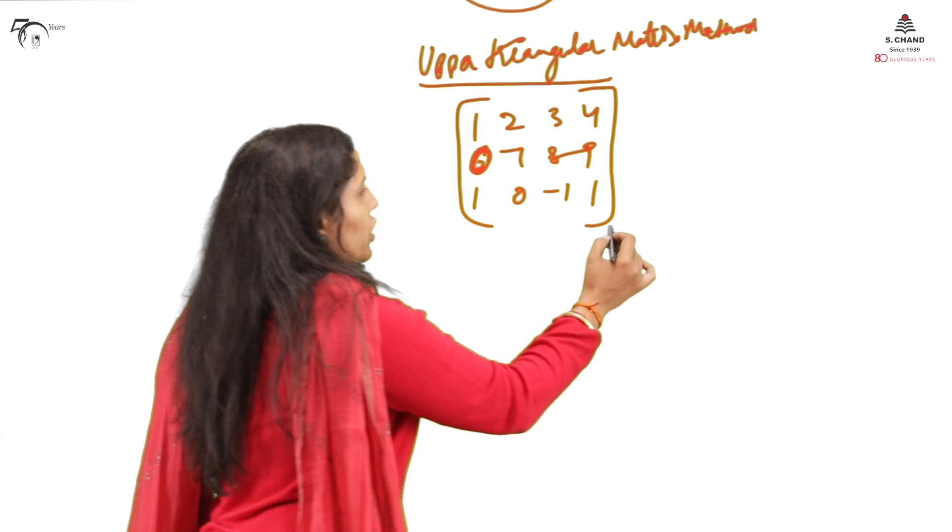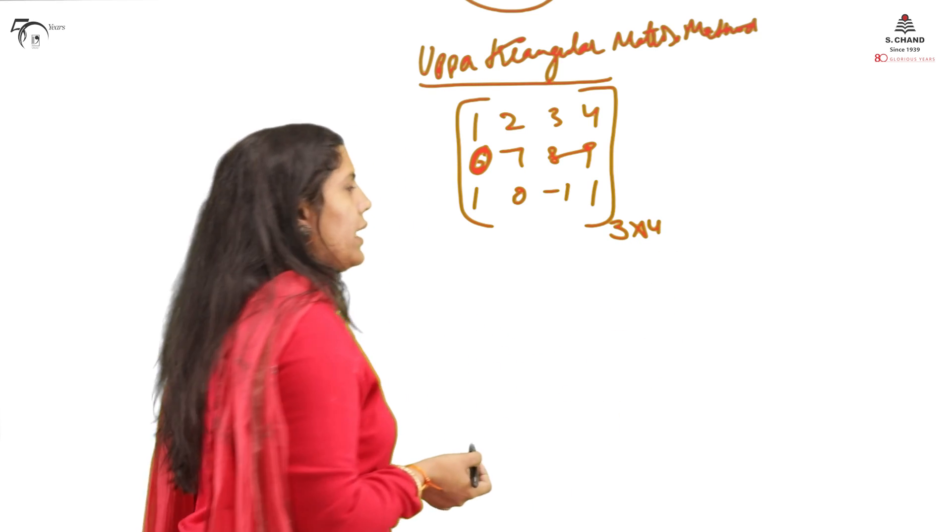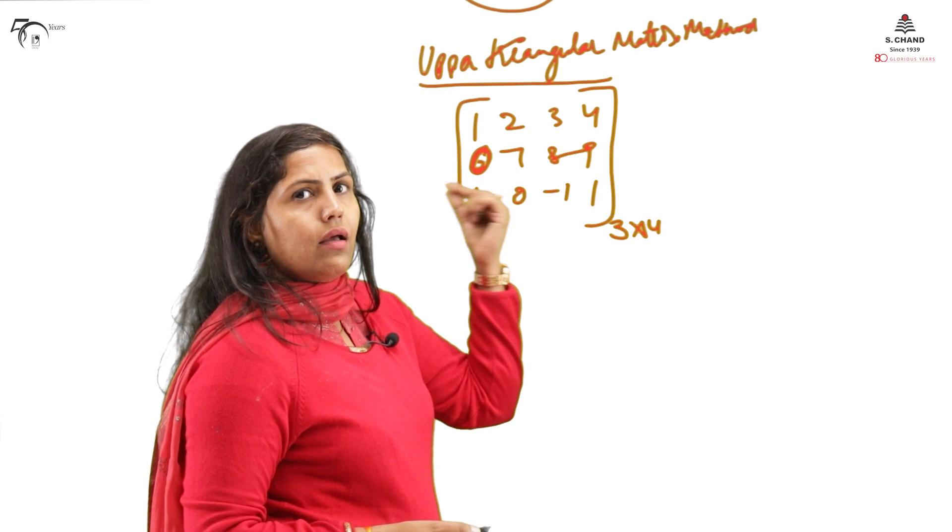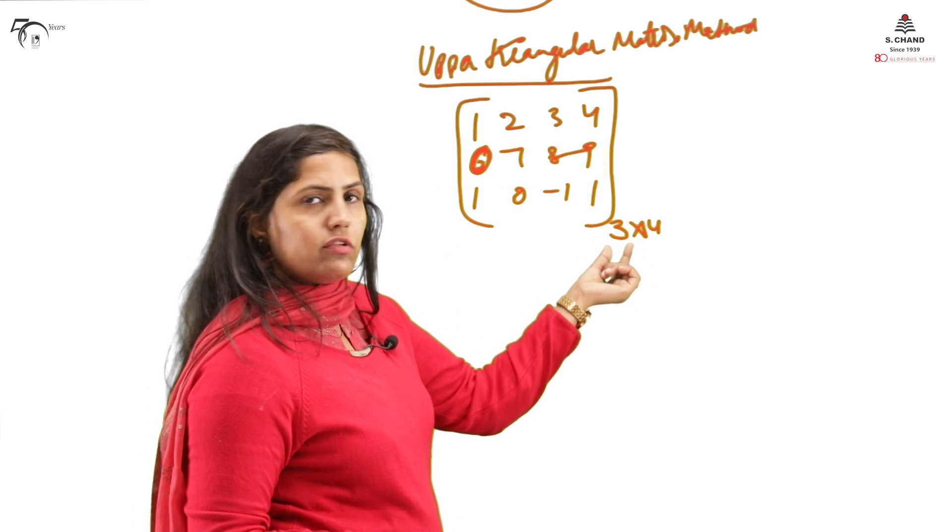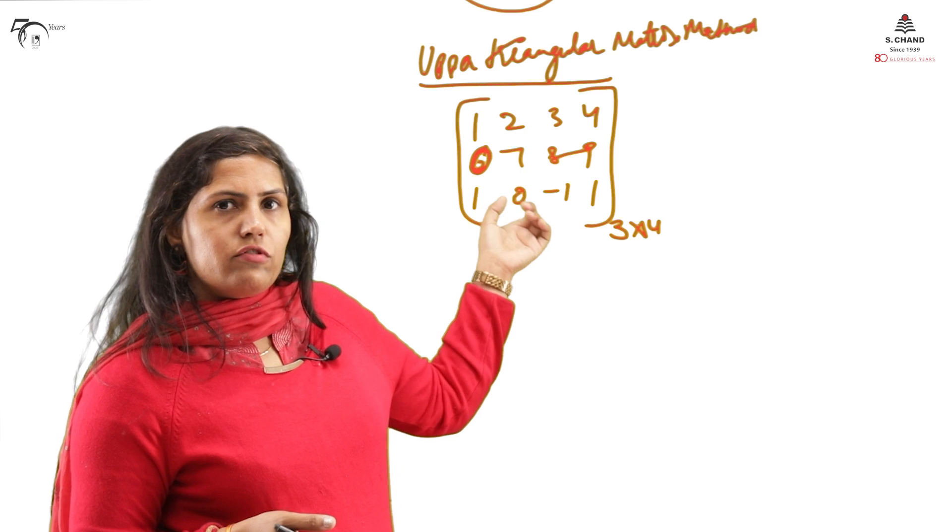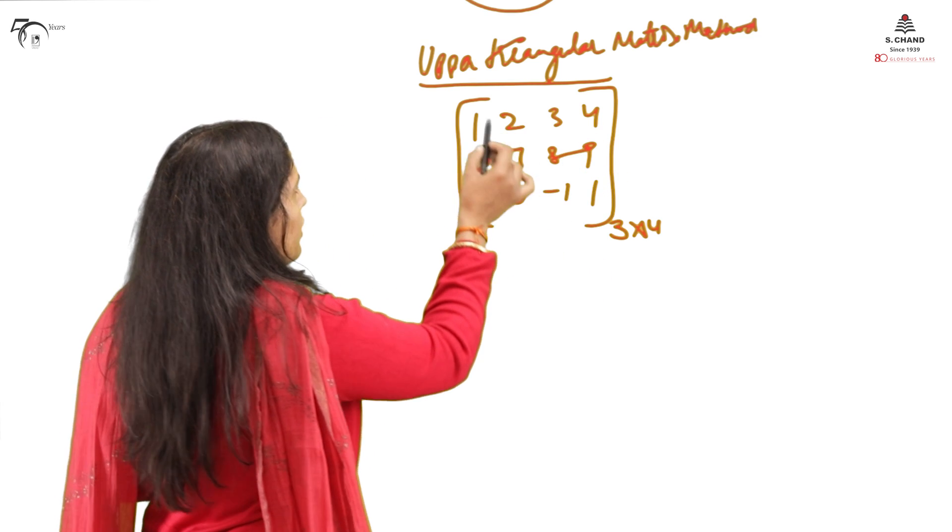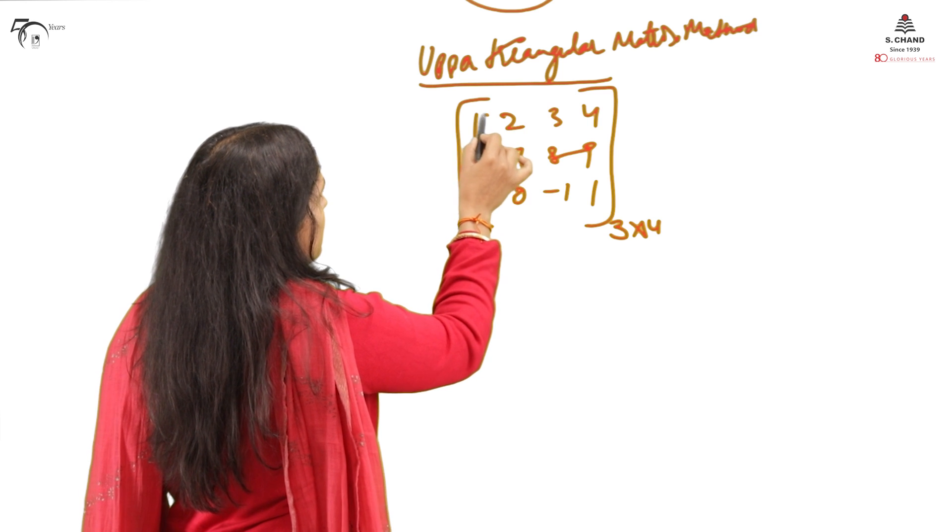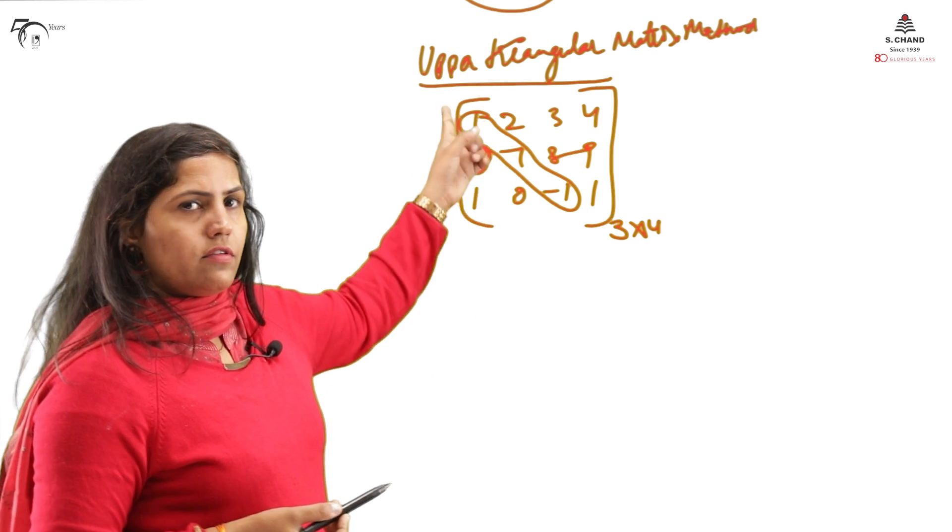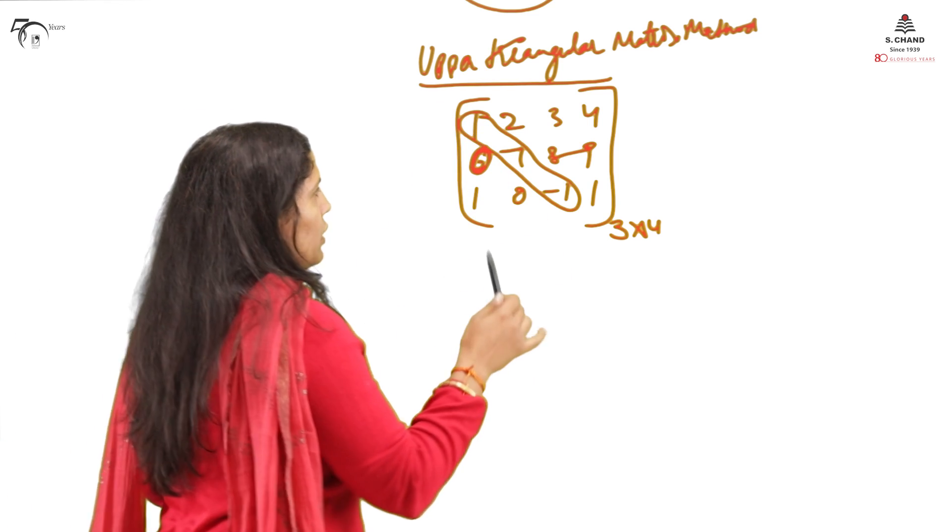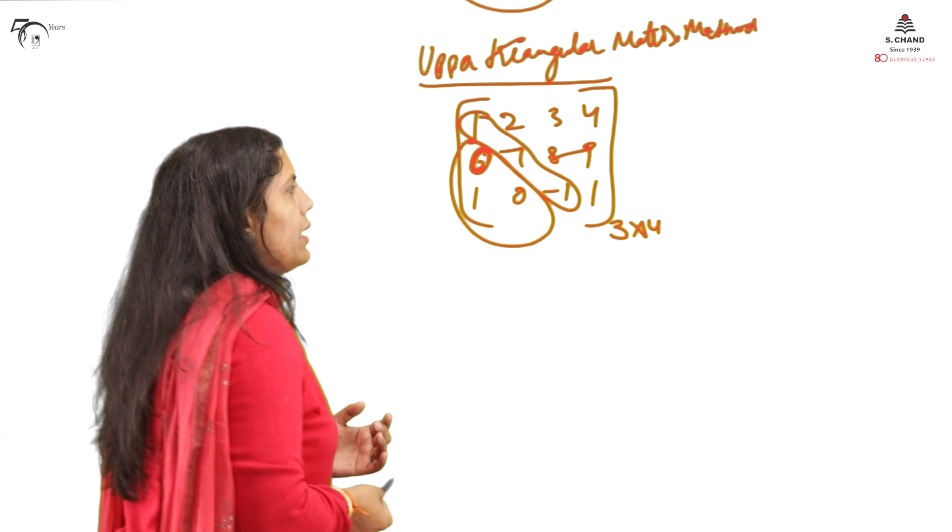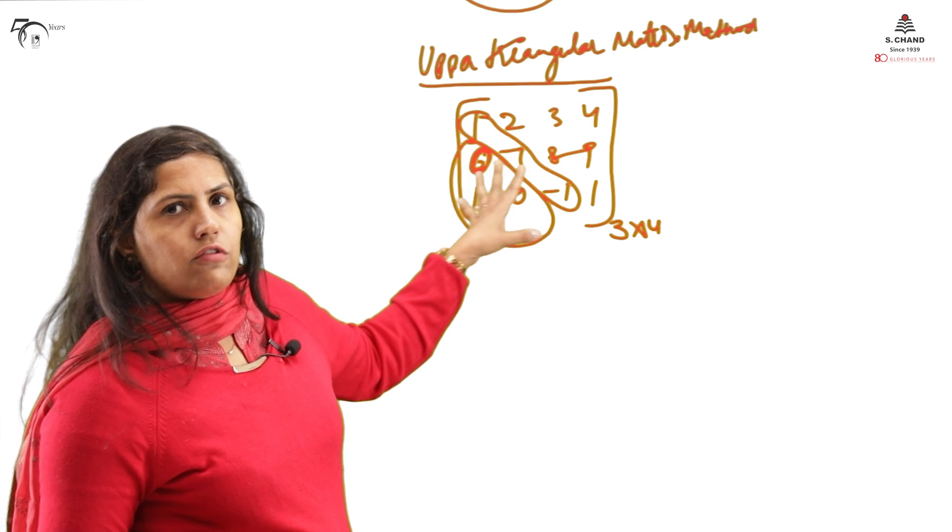And that method is called upper triangular matrix method. It is simple because we have learned row and column operations. I am considering a matrix, and this time I am taking a big matrix. If I start doing it by minor method, it becomes difficult. So suppose this is the matrix, 3 cross 4 matrix. See the diagonal, main diagonal. Now your purpose will be to make these elements 0 below diagonal. This is the first step of the method.